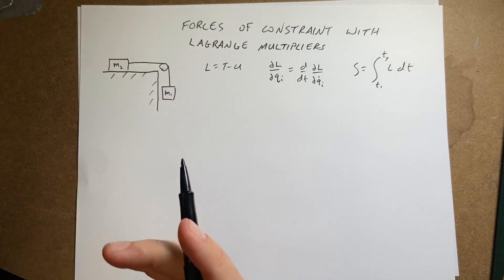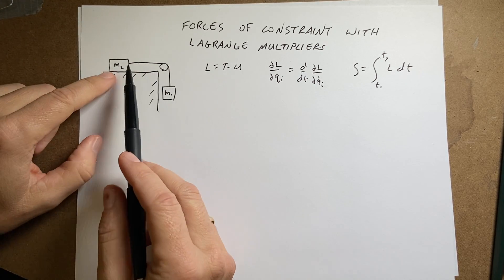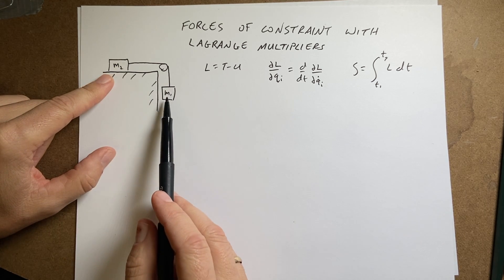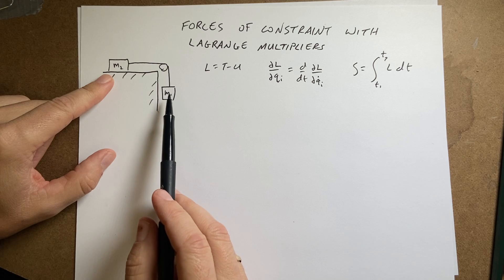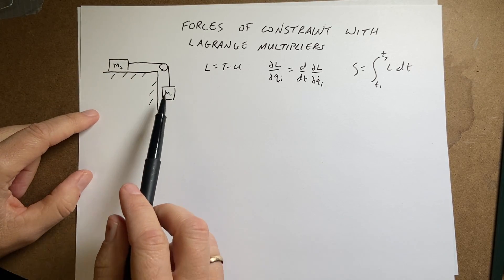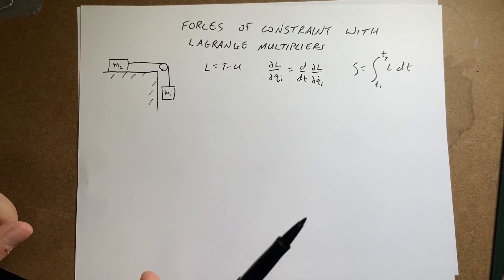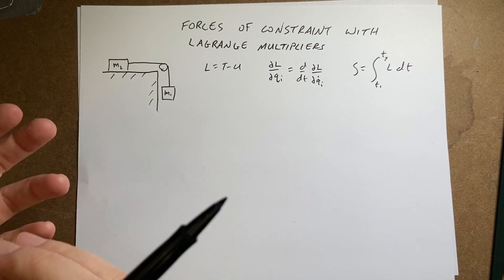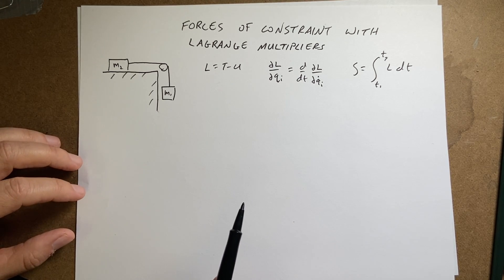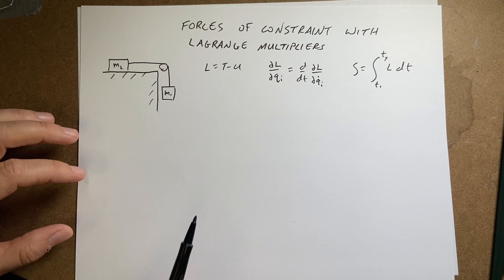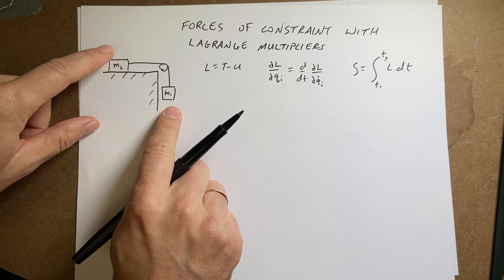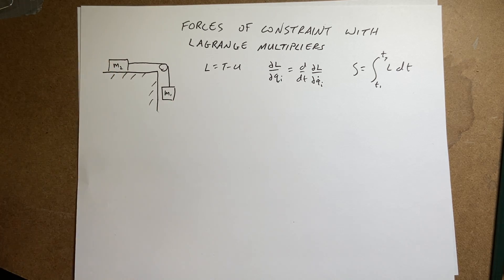This allows us to take a system like this. In this system I have a half Atwood's machine: mass m2 on a frictionless surface and mass m1 hanging over. I can describe this with just one variable, because I only need one variable to describe the configuration of this system. But what if I want to use that to find the tension in this string? That's a force of constraint — the force that constrains the position of this to be relative to the position of that. So how do we do that?